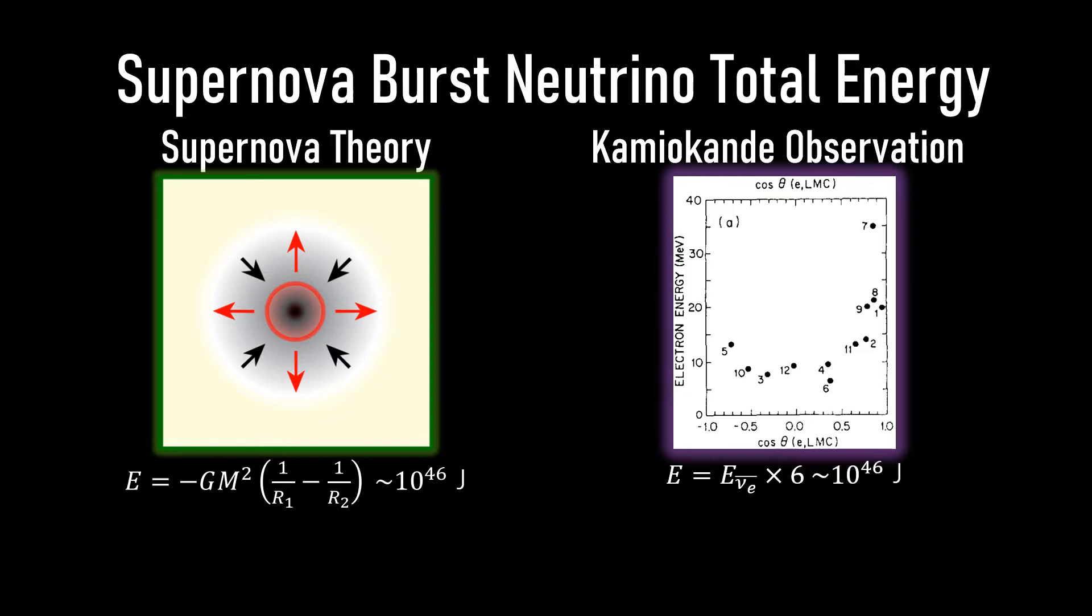Antineutrinos are also produced by annihilation. The final radius is about 10 kilometers and the total energy released, equal for the different neutrino species, is about 3 times 10 to the 46th joule. The mean neutrino energies are 10 to 20 mega electron volts.